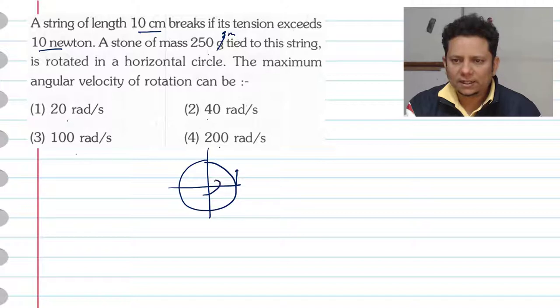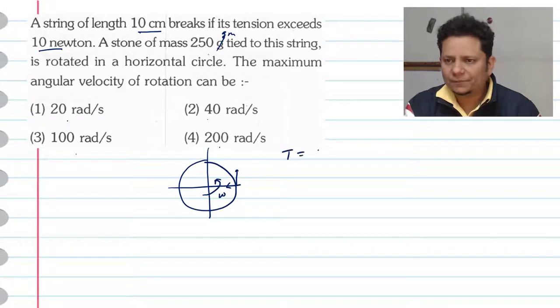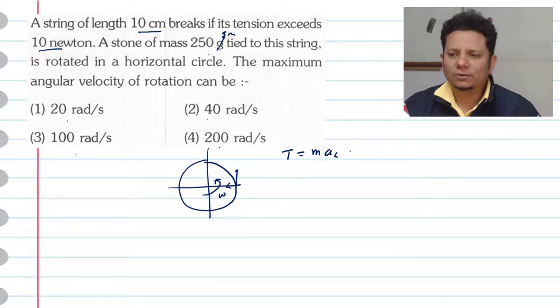Let's say this is the angular velocity omega. So in this case the tension is T. This will be equal to M times A C. Here the necessary centripetal force will be provided.